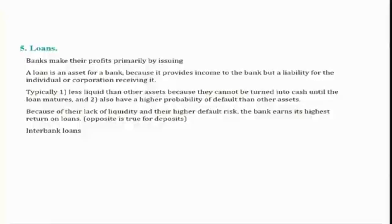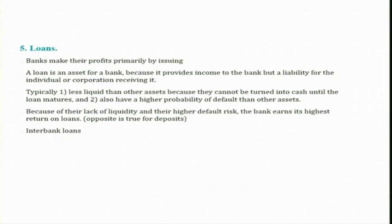Coming to loans, this is an important activity of a bank. Banks make their profits primarily by issuing loans. A loan is an asset for a bank because it provides income to the bank, and at the same time it is a liability for the individual or corporation receiving it. Typically a bank loan is less liquid than other assets because it cannot be turned into cash until the loan matures, and it also has a higher probability of default. Because of their lack of liquidity and higher default risk, the bank earns its highest return on loans.